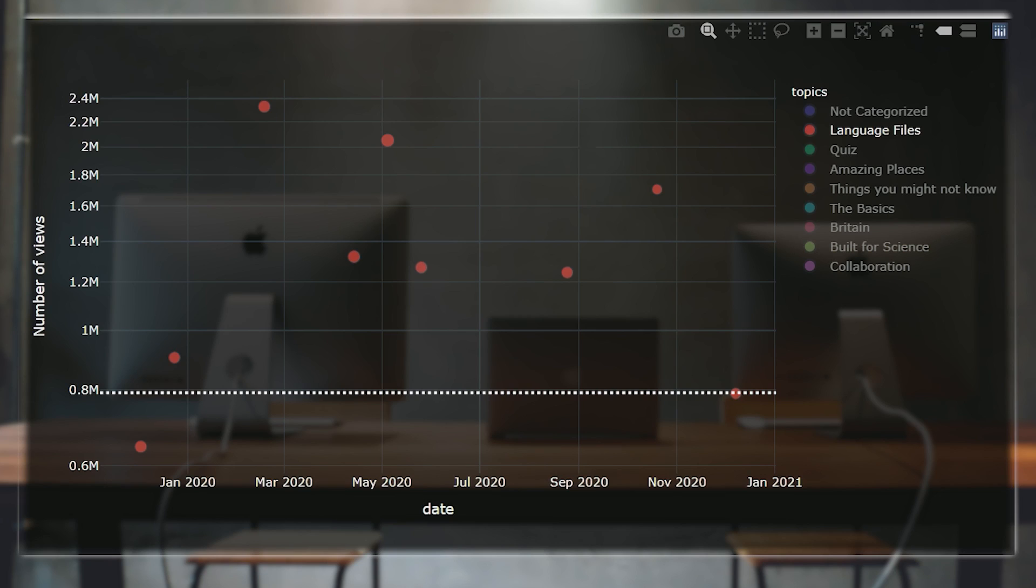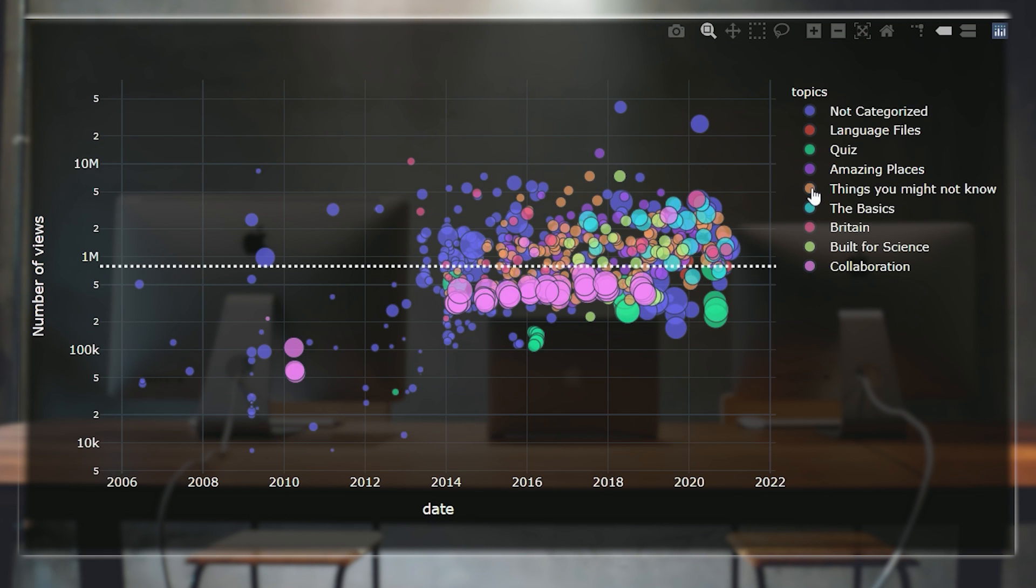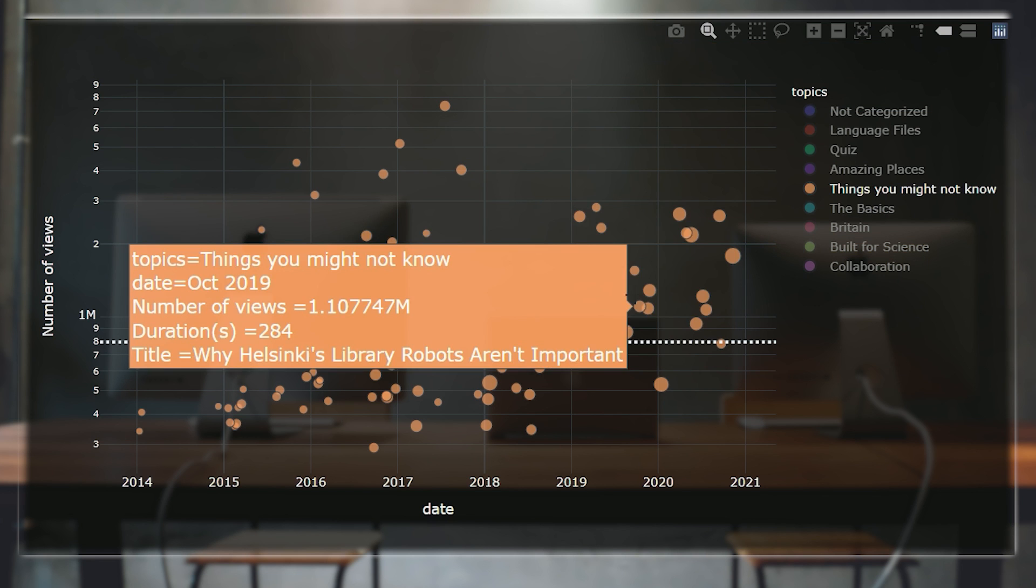The language files. You can see how popular they are. Amazing places. There are lots of amazing place videos, and they generally do quite well. Just like things you might not know. A lot of things you might not know videos doing very well.